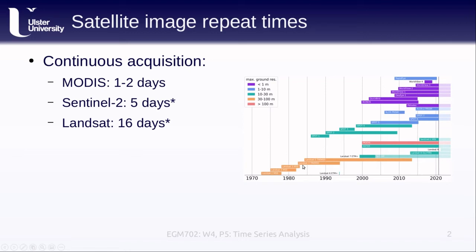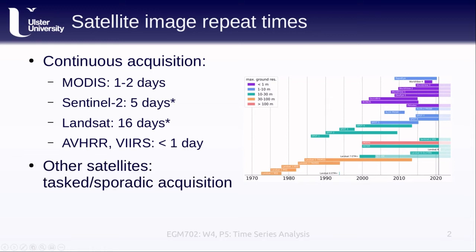You may find images back in the 80s and 90s where you have repeats that often, but that's more of an exception. Two other sensors we haven't spent much time on — the AVHRR and the VIIRS sensors — are primarily meteorological satellites with repeat acquisitions of less than a day in many cases, although they have very low spatial resolution on the order of a kilometer, so they are not necessarily useful for all the applications we might be interested in.